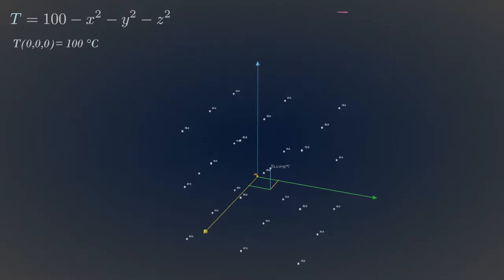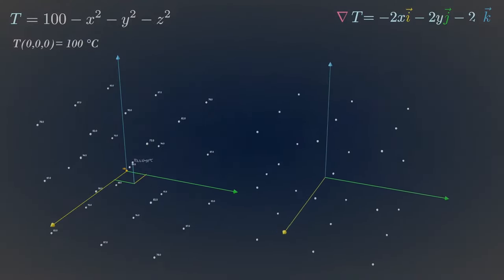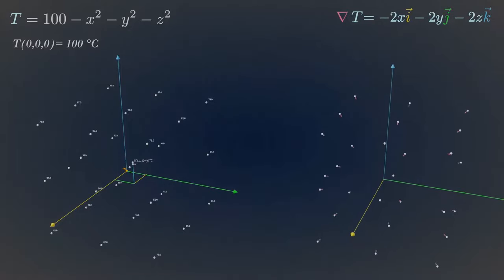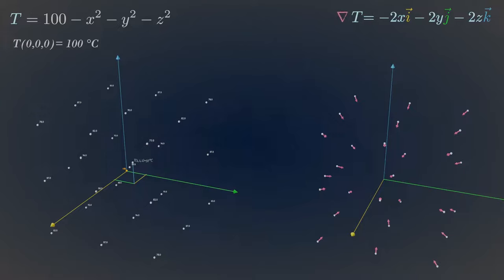Now, if you multiply this scalar field with a vector operator, then what you get is a vector field — more basically, a gradient vector field. This nabla operator here isn't really a vector; it is rather a differential operator. It plays a significant role in vector calculus.